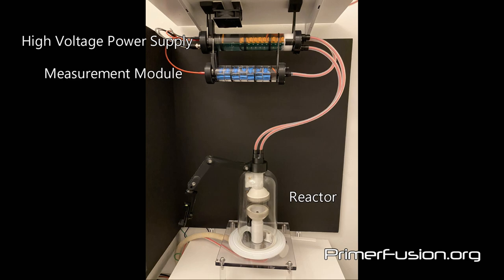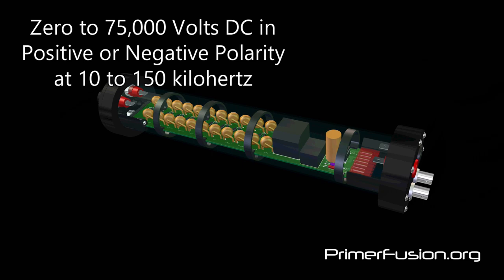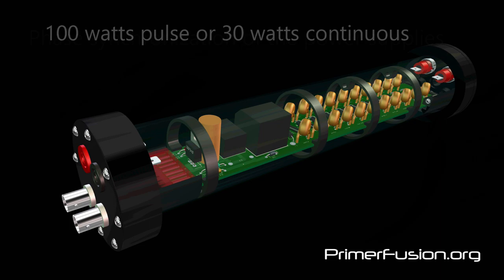Since I could not find commercially available high voltage power supplies that met my specifications, I decided to design and build my own. These high voltage power supplies allow me to adjust the voltage level, polarity, and frequency of the electricity flowing through the hydrogen boron plasma.